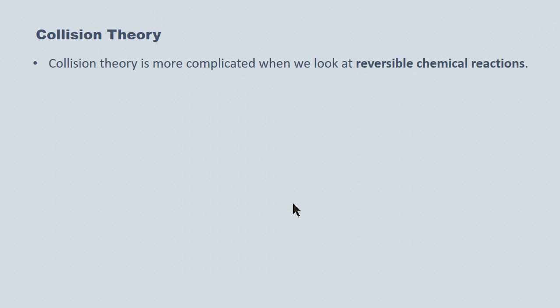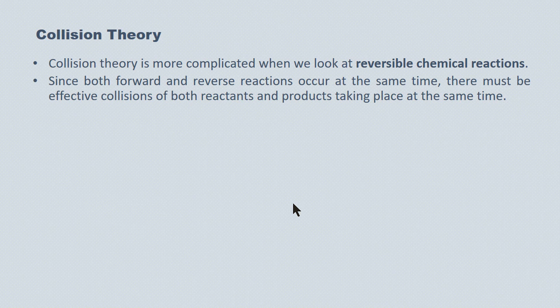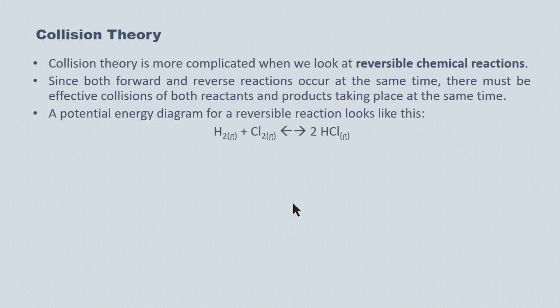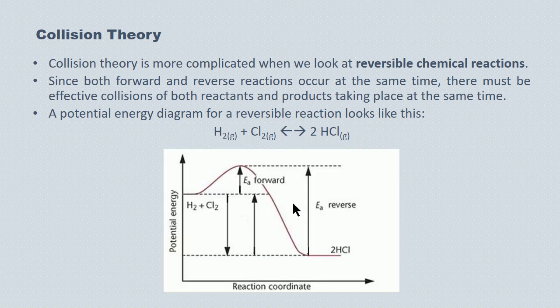Collision theory becomes a little more complicated when we look at reversible chemical reactions. Since both forward and reverse reactions occur at the same time, there must be effective collisions of both reactants and products taking place simultaneously. A great many chemical reactions proceed both in the forward and reverse direction at the same time. Here we show both the formation and the decomposition of hydrogen chloride gas, and here's the potential energy diagram for the reversible reaction.